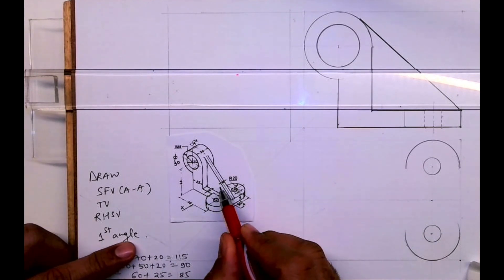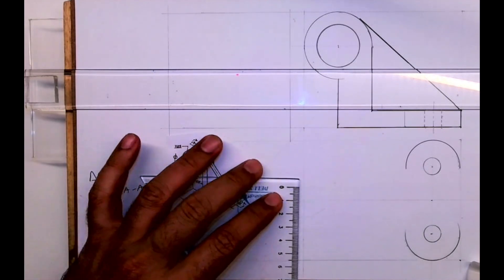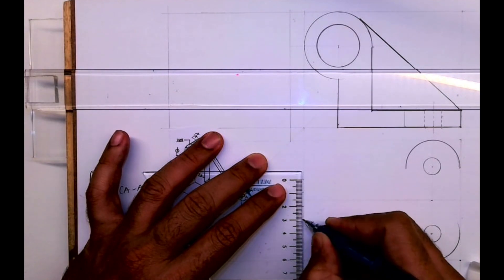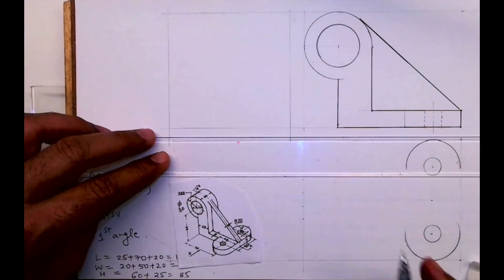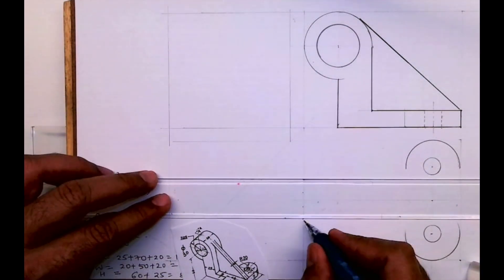This we are done. Now we'll draw these two lines for that. We'll take from center, we'll take 15, 15, and we'll mark 10, 10, 10, 10, see like this.